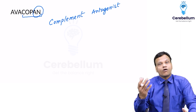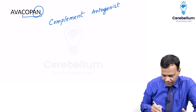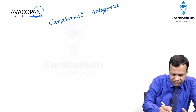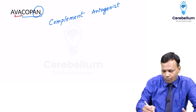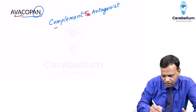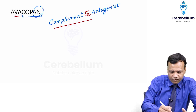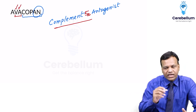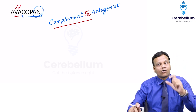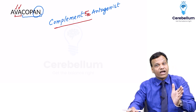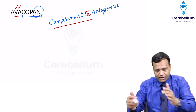Now, which component of complement? Again, the name tells us — 'VA' looks like 5 in Roman numerals, and 'A' stands for A. So it is a complement 5A antagonist — Avacopan is a complement 5A antagonist.